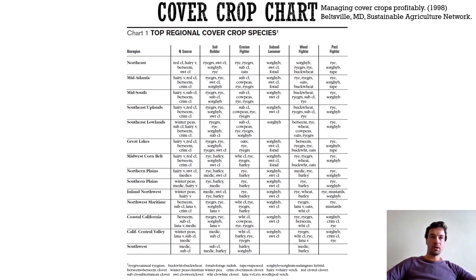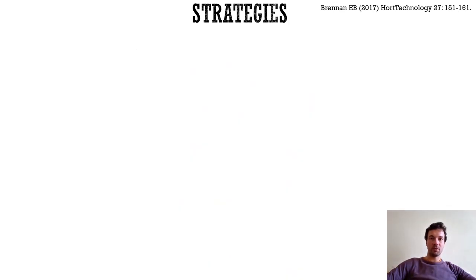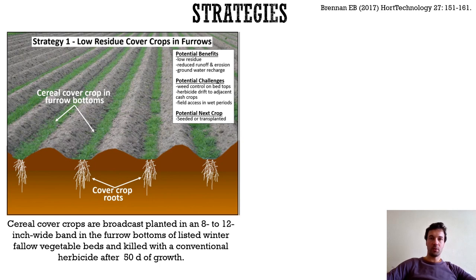Several strategies have been proposed for integrating cover crops into intensive vegetable production. One strategy is growing low residue cover crops in furrow bottoms, where a cereal crop is broadcasted into furrow bottoms in autumn and after a short growing period it is terminated with herbicide — best suited for conventional farming. Low residues decompose quickly and shallow tillage prepares beds for the main crop. In California, this strategy almost totally eliminated sediment loss and nitrogen and phosphorus runoff, but was not effective at reducing nitrate leaching and is suitable for fields with low to moderate residual soil nitrate in fall and high runoff potential.